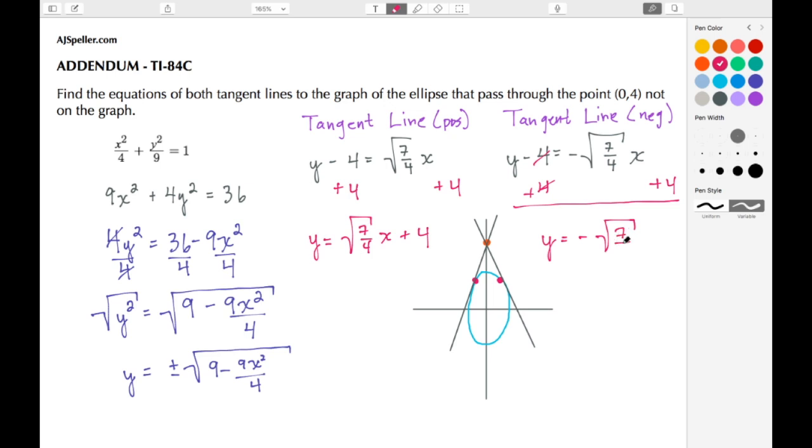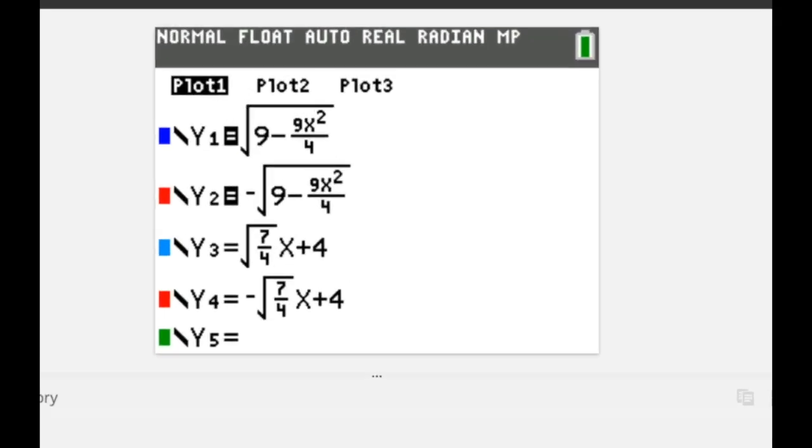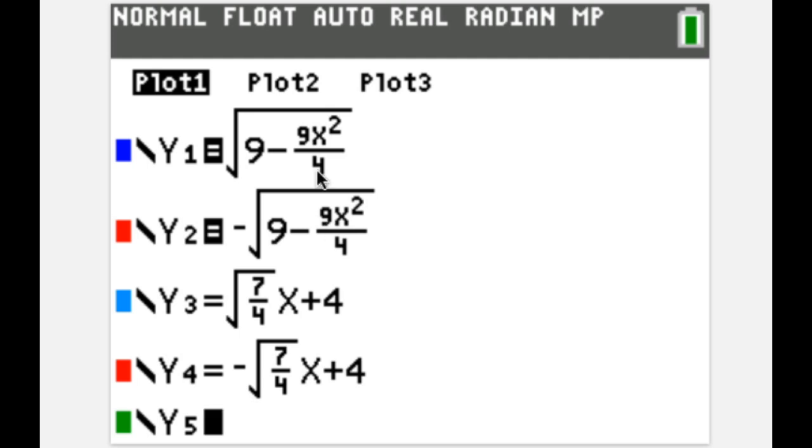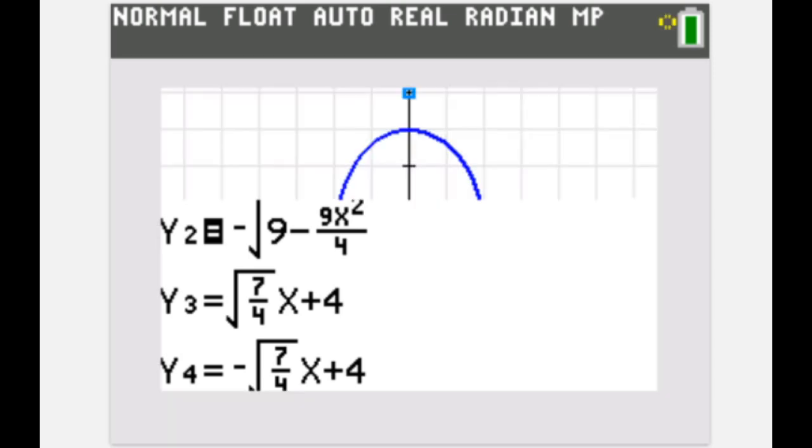Now let's take a look at the calculator so that we can see how this looks. If you look, you see I already have the equations in place. Y1 is for the top part of the ellipse, Y2 is for the bottom part of the ellipse. I've turned off the two tangents momentarily, so let's go ahead and draw the graph.